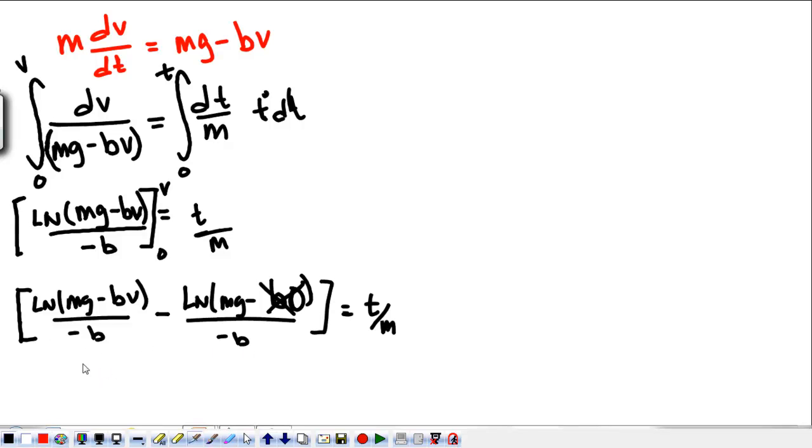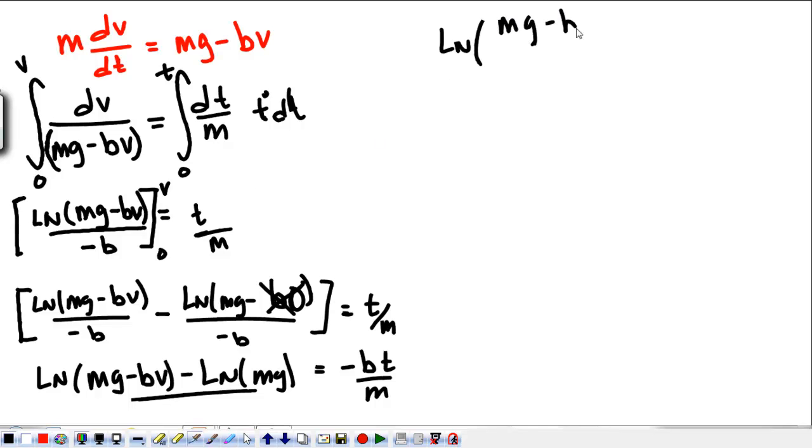So, let's get rid of that negative b. So, I have the natural log of mg minus bv minus the natural log of mg. And that's equal to negative b times t over m. What we have to do here is remember some rules about natural logs because I need to simplify this side. What I get is the natural log of mg minus bv over mg is equal to negative bt over m.